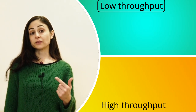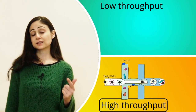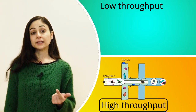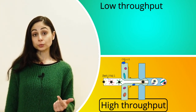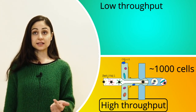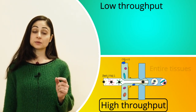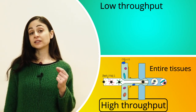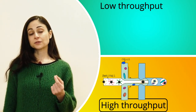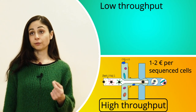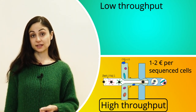On the other hand, we have the possibility to work with high throughput. In this case, microfluidics comes into play. Indeed, this approach has recently increased the analysis throughput of single-cell assays to thousands of cells at once, allowing the analysis of not just specific cell types, but of entire tissues. For microfluidic transcriptomics, with as few as 1 or 2 euros per cell, we are now able to describe the phenotypic variability of a complex population of cells.